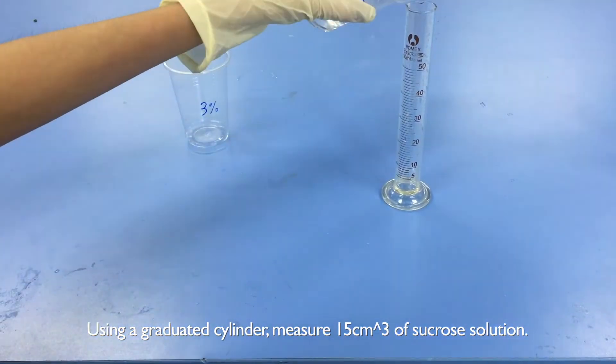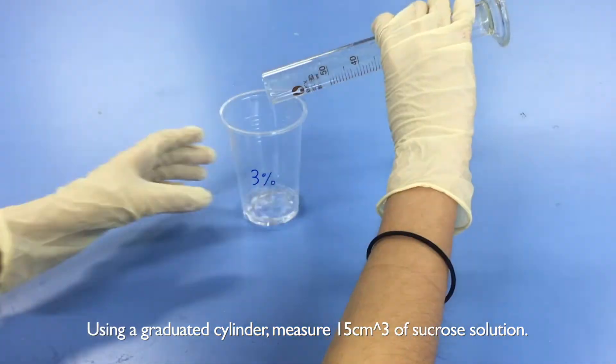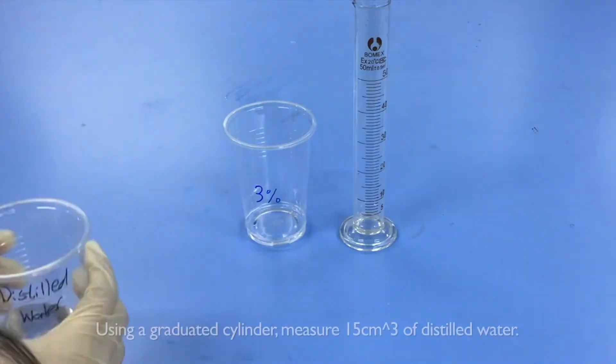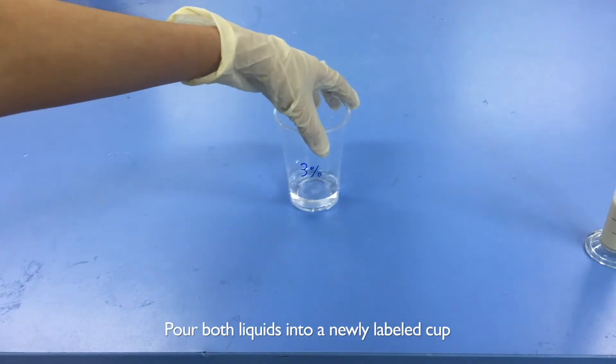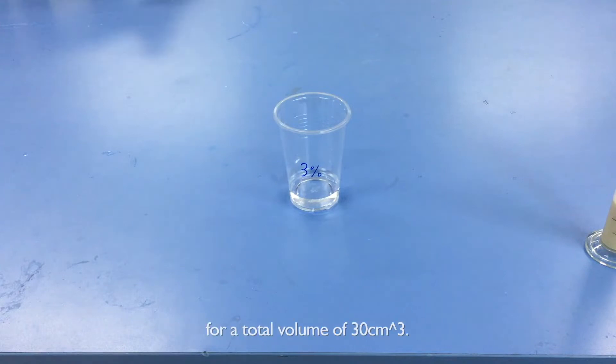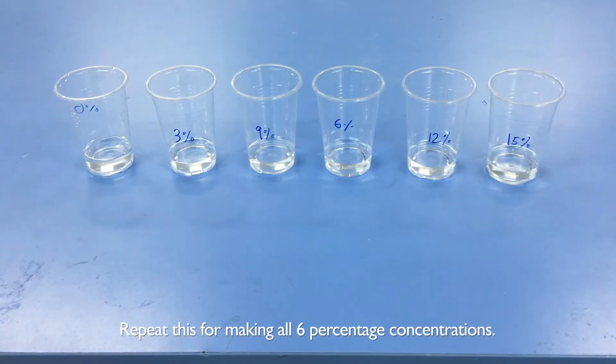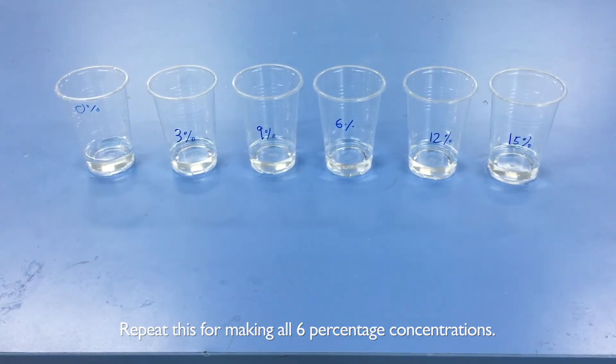Using a graduated cylinder, measure 15 cubic centimeters of sucrose solution. Using a graduated cylinder, measure 15 cubic centimeters of distilled water. Pour both liquids into a newly labeled cup for a total volume of 30 cubic centimeters. Repeat this for making all 6 percentage concentrations.